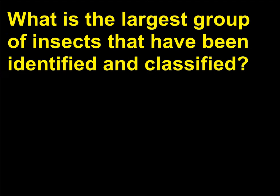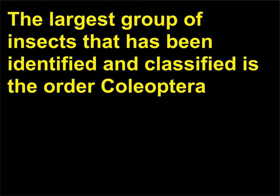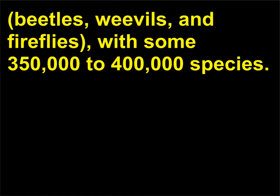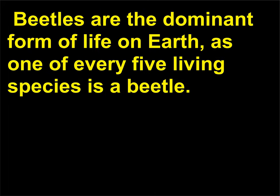What is the largest group of insects that have been identified and classified? The largest group of insects that has been identified and classified is the order Coleoptera — beetles, weevils, and fireflies — with some 350,000 to 400,000 species. Beetles are the dominant form of life on Earth, as one of every five living species is a beetle.